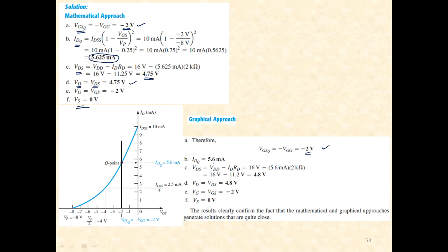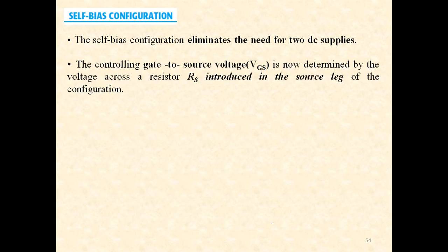For the graphical approach, the first step is the same — find VGSQ. The difference lies in finding IDQ: once VGSQ is found, draw the line and wherever it intersects the transfer curve you get the Q point. Graphically IDQ equals 5.6 milliamperes versus mathematically 5.625 — they are almost the same, confirming that both approaches generate quite close solutions.